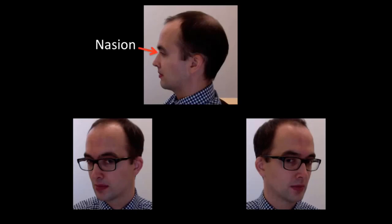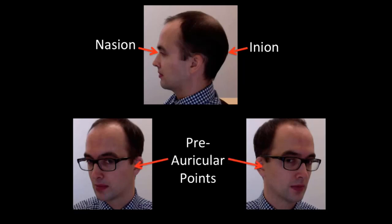First, we will start with the terminology. The system by which EEG electrodes are applied to the head and displayed on recordings is called the International 10-20 System. This is a standard method of measuring the head and placing electrodes, depending on four main positions: the nasion at the bridge of the nose, the inion — the bony prominence at the back of the head — and two preauricular points just anterior to each ear.